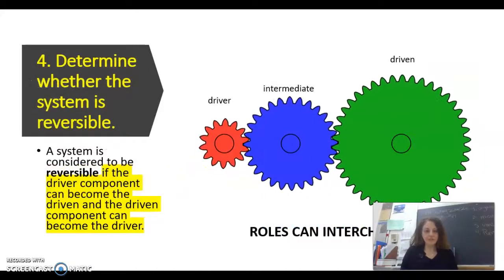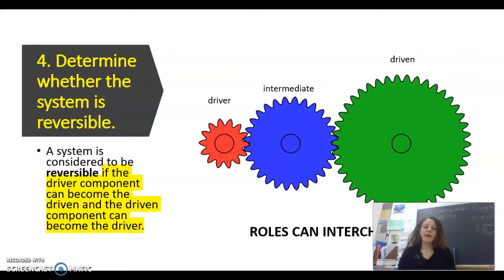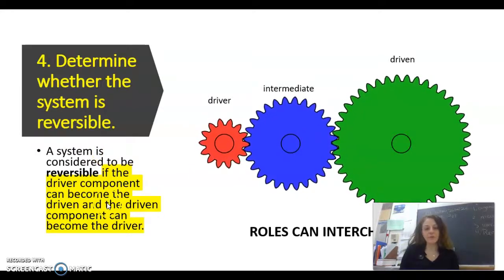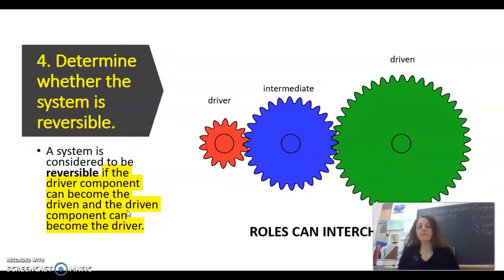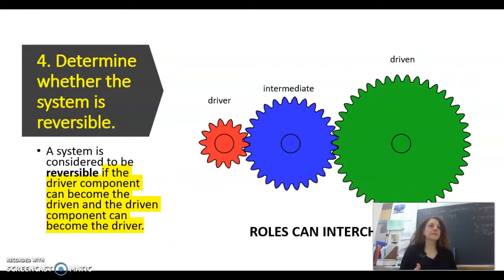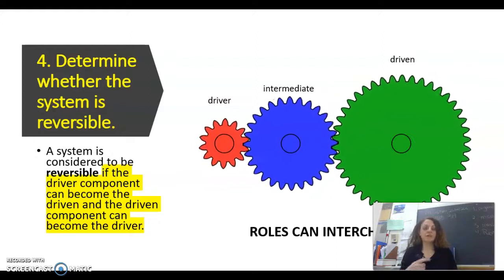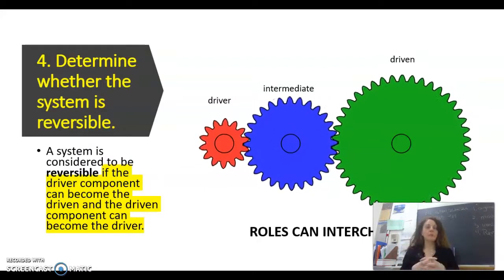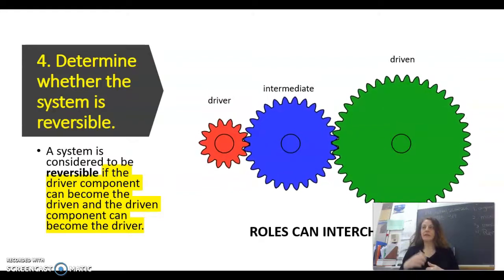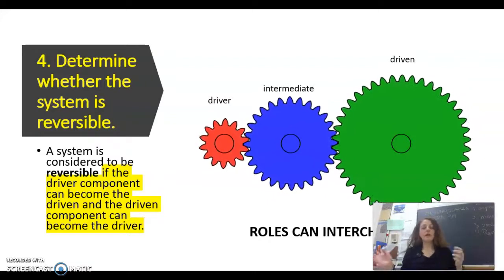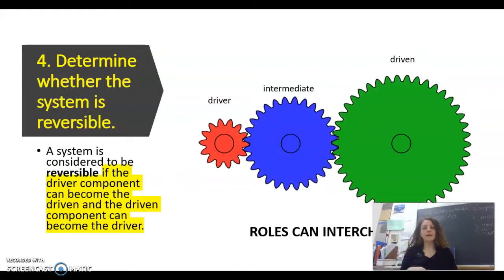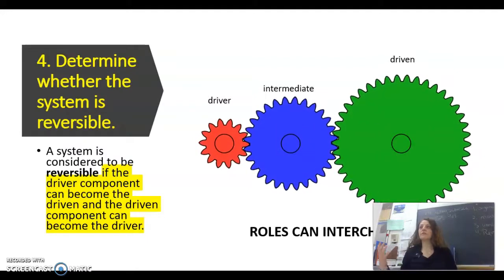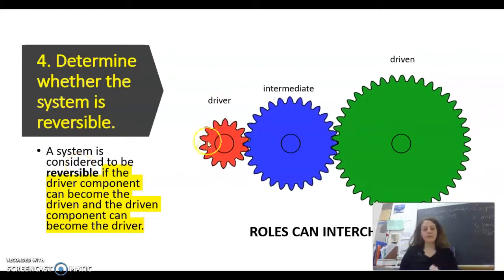Now once you have determined if you have a transmission or a transformation system, we have to look at the reversibility of the system. What I mean by reversible, as you can see here, if the driver component can become the driven and the driven can become the driver. When I say reversibility I don't mean I can turn clockwise or counterclockwise or upside down right side up, things like that. No, it's really more a role reversibility. The driver is always the one in charge of the movement and the driven will follow along. Without the driver the motion wouldn't be possible.